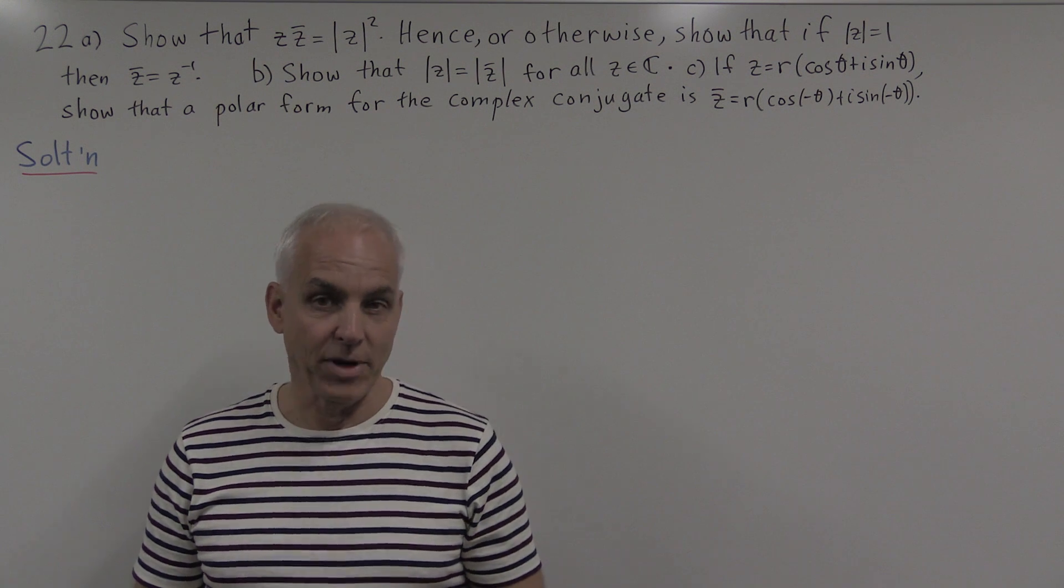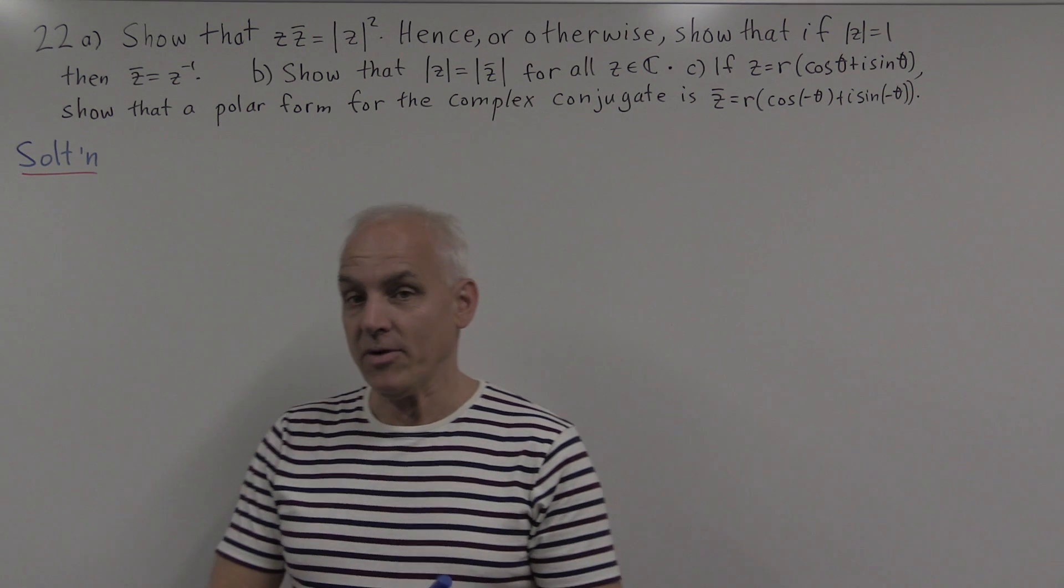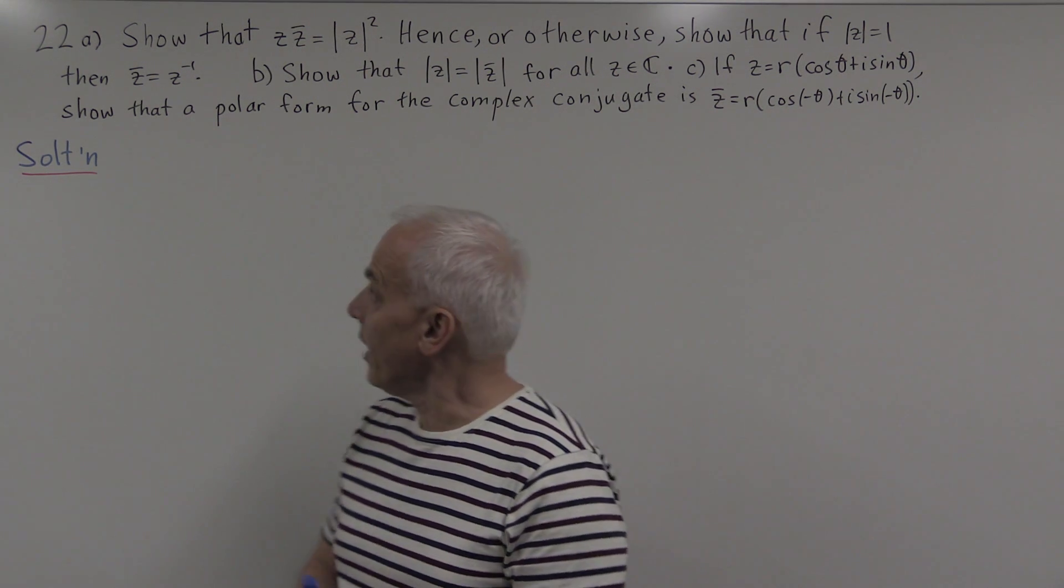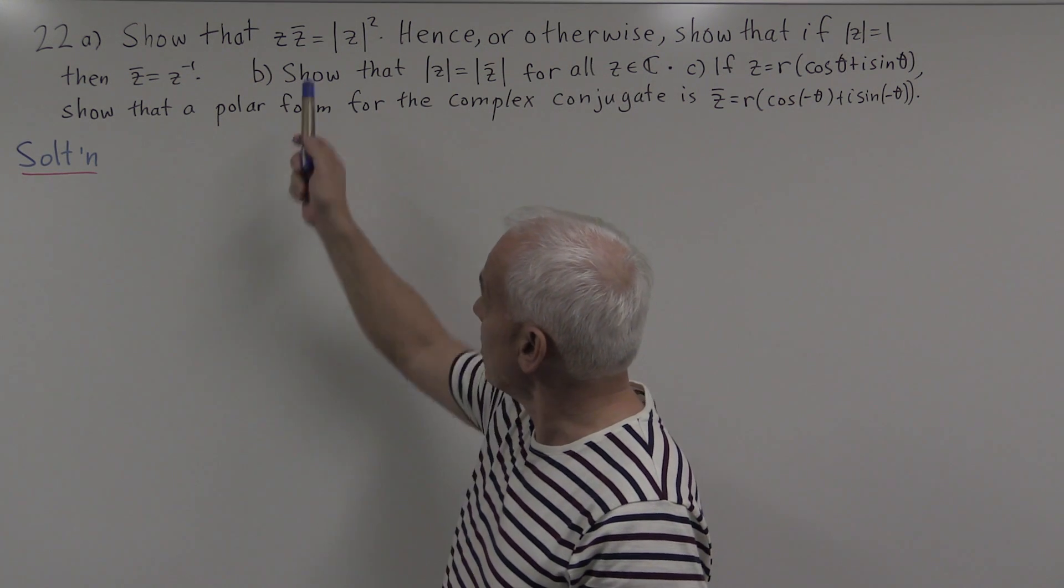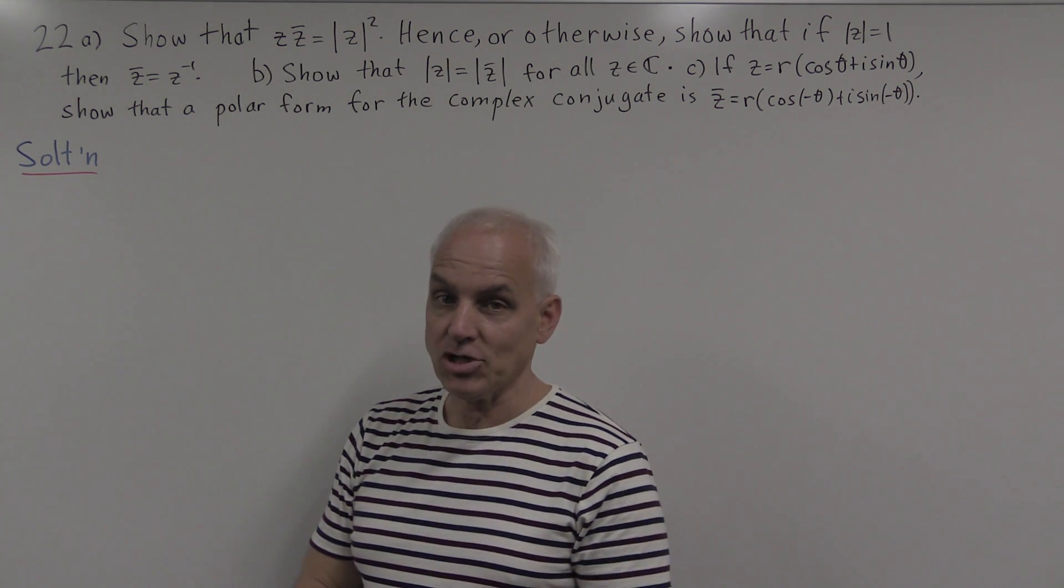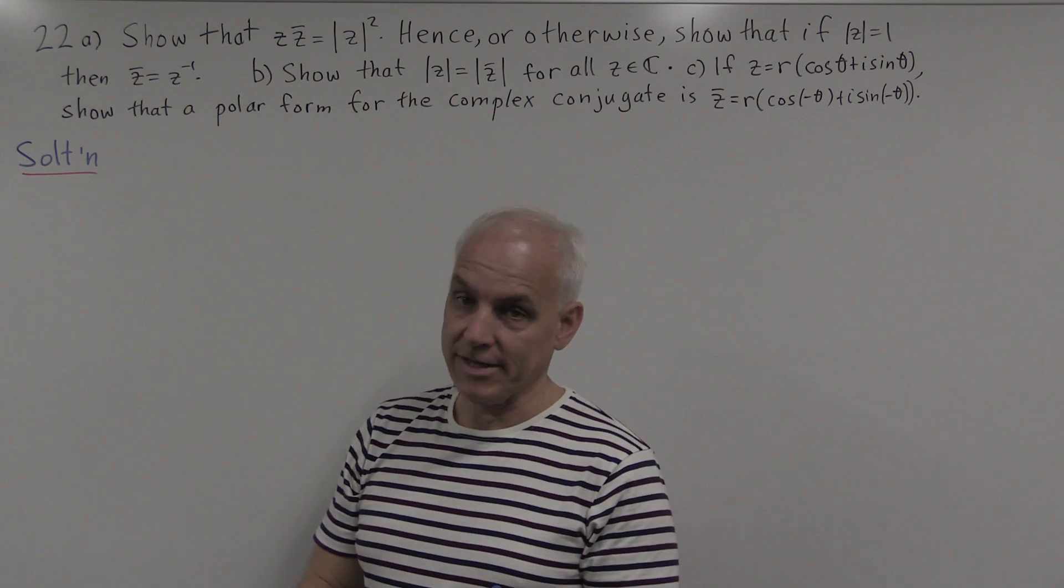Hello, we're here at the University of New South Wales and I'm Norman Weylberger. We're in chapter 3 of the linear algebra problems, and this is question 22, which has a number of parts about complex conjugation and the relationship with the length squared of a complex number.